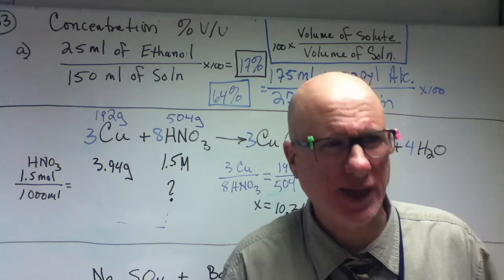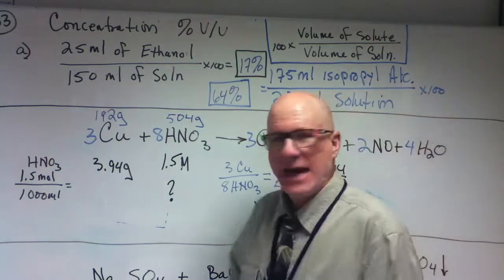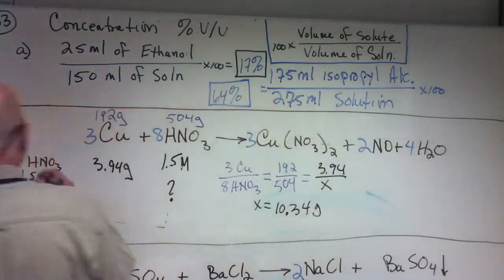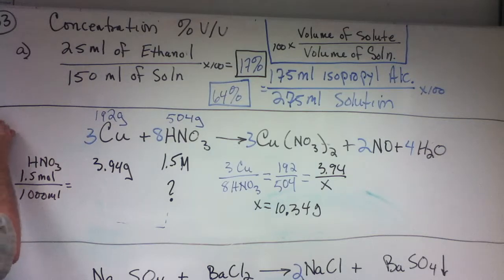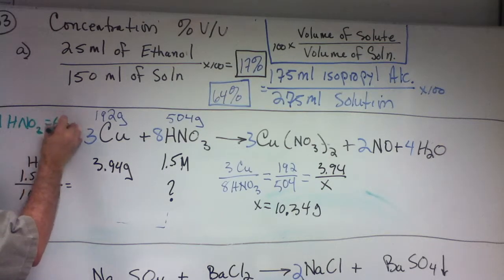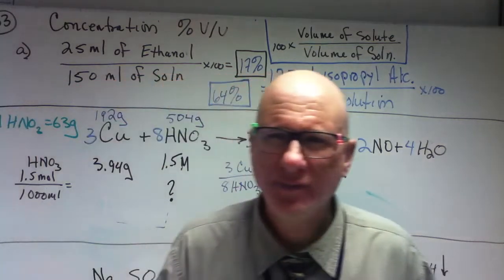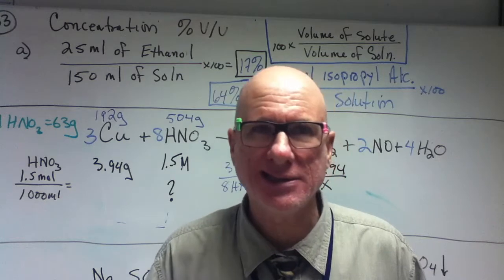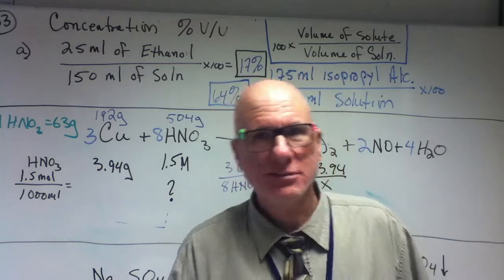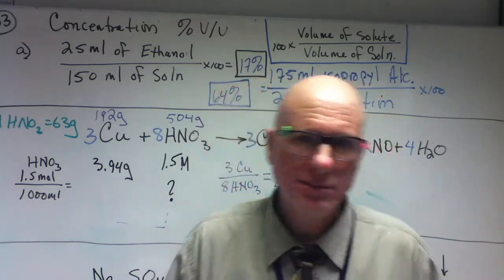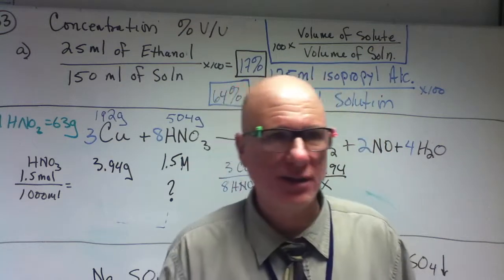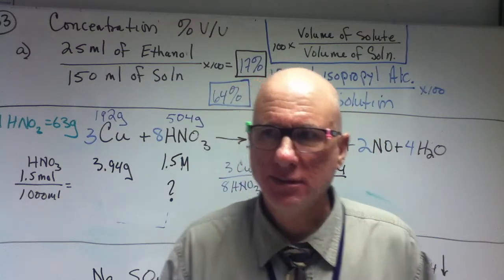63. Okay, good. So I know that 1 mole of nitric acid equals 63 grams. So what's 1.5 moles? What's 63 plus half of 63? 94.5. 94.5. Well done, Mohammed. Excellent.